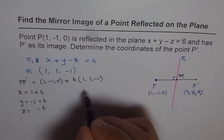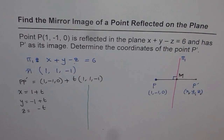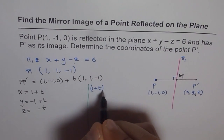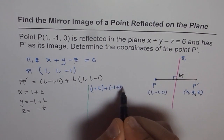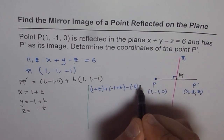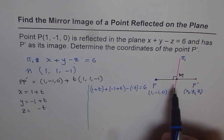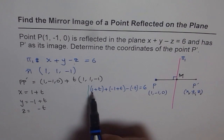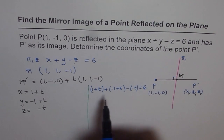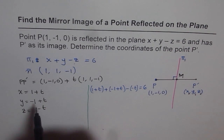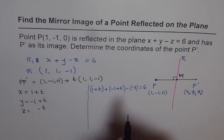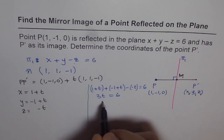Substituting into the plane equation: (1 plus t) plus (minus 1 plus t) minus (minus t) equals 6. Simplifying: 1 minus 1 is 0, and collecting the t terms gives 1 plus 1 plus 1, so 3t equals 6, therefore t equals 2.